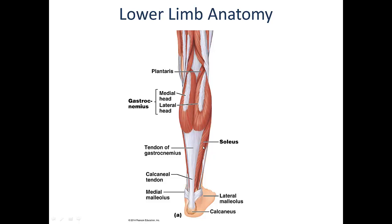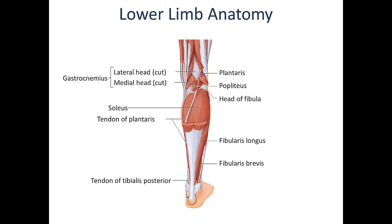Just deep to the gastrocnemius is the soleus. This muscle only crosses the ankle joint and is primarily responsible for plantar flexion. We can see the arrangement of the soleus relative to the gastrocs more clearly here — with the gastroc muscles removed, we can see the main body of the soleus. It's a relatively large muscle, running from the most proximal end of the tibia and fibula almost all the way down to the calcaneus. Due to the overall length of this muscle relative to the relatively short gastroc muscles, the soleus will produce force over a greater range of motion.